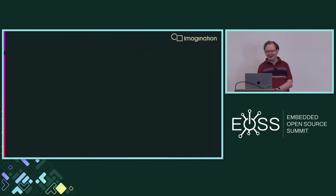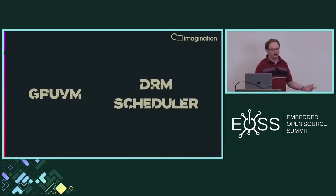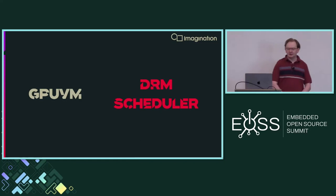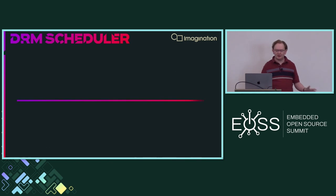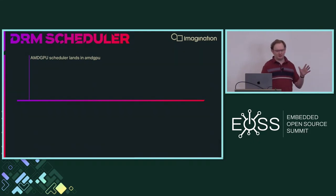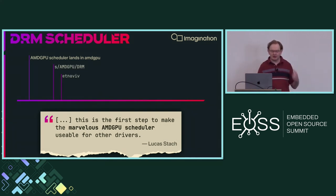There are two relatively new components in the DRM subsystem I'd like to talk about today: GPU VM and the DRM scheduler. Let's start with the scheduler. It's not actually that new — the earliest version landed in the AMDGPU tree almost a decade ago, back in 2015. Two years later, Lucas Stack recognized the AMDGPU scheduler and worked to move it into DRM common code, with an initial prototype of the Etnaviv driver already using it.